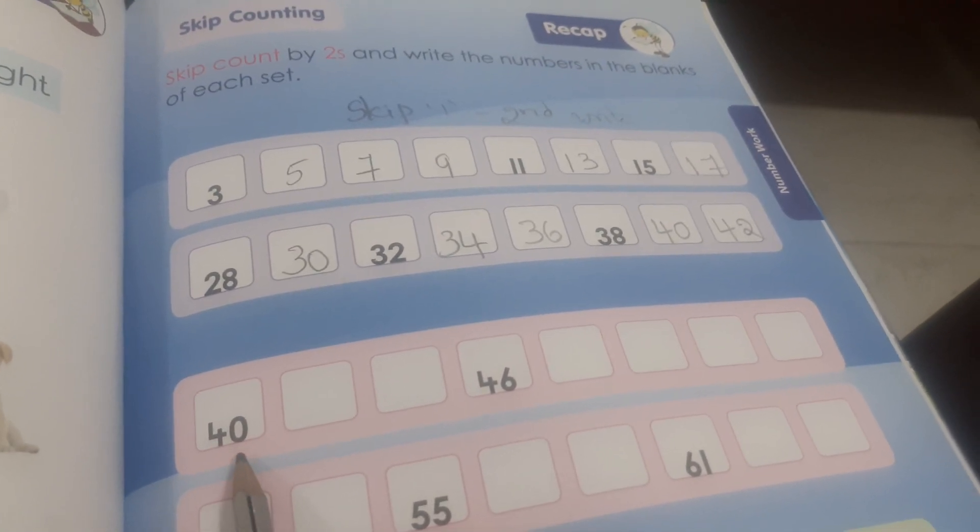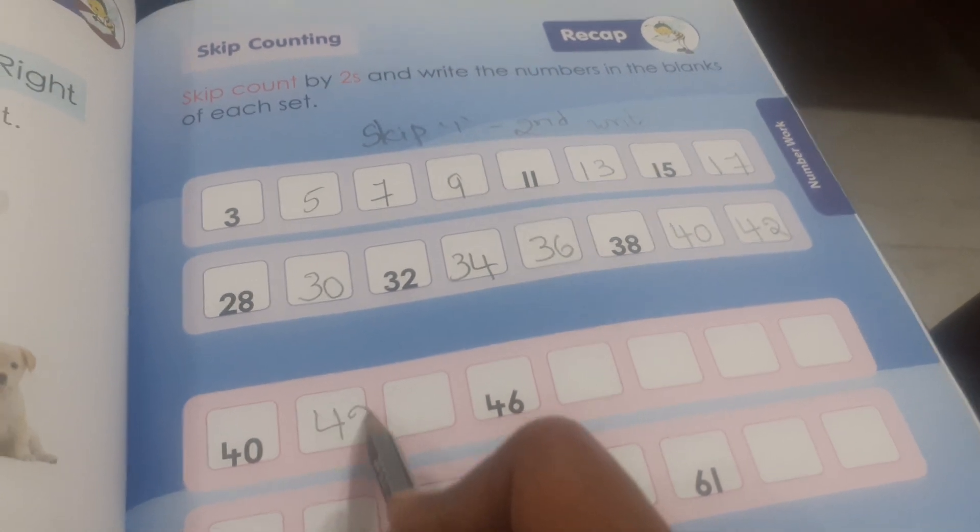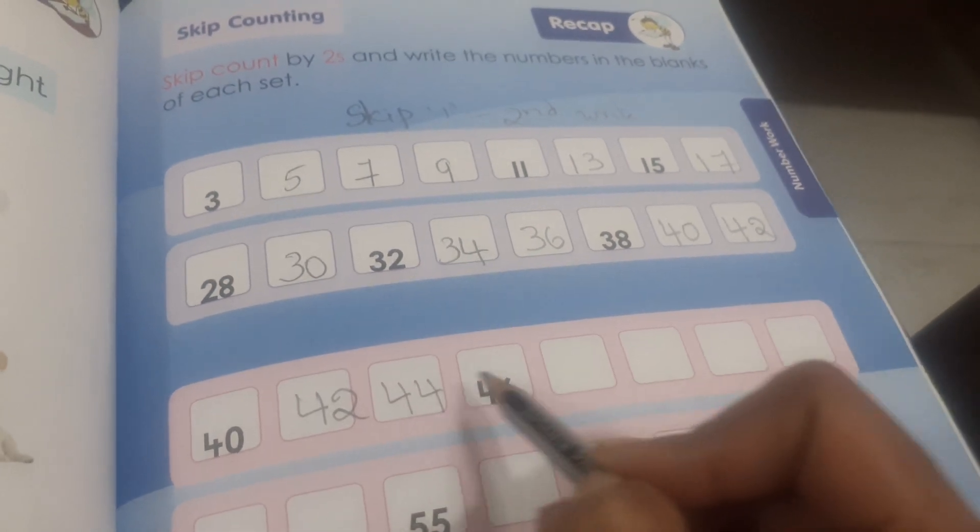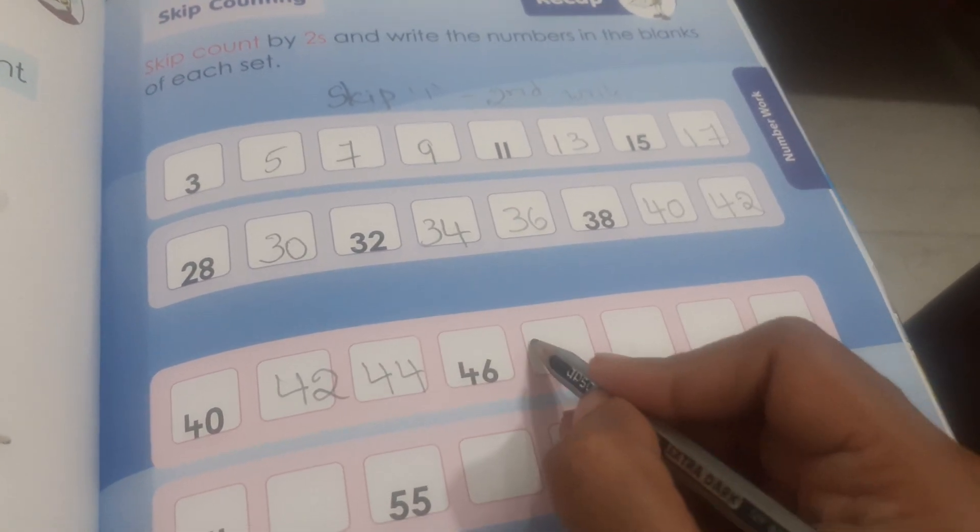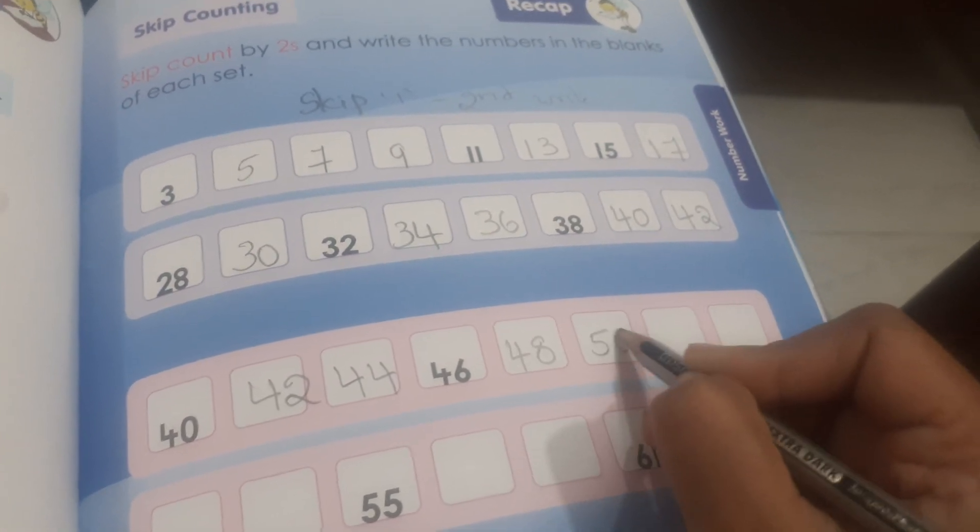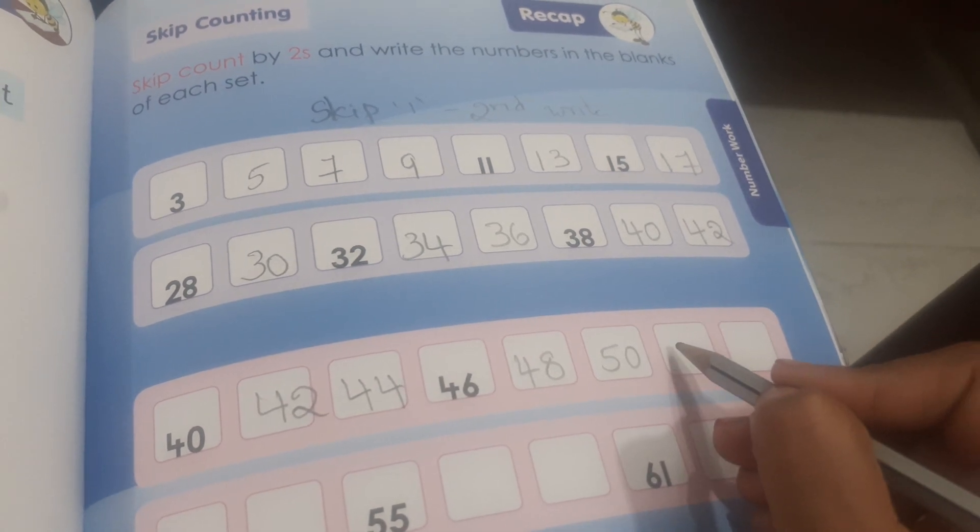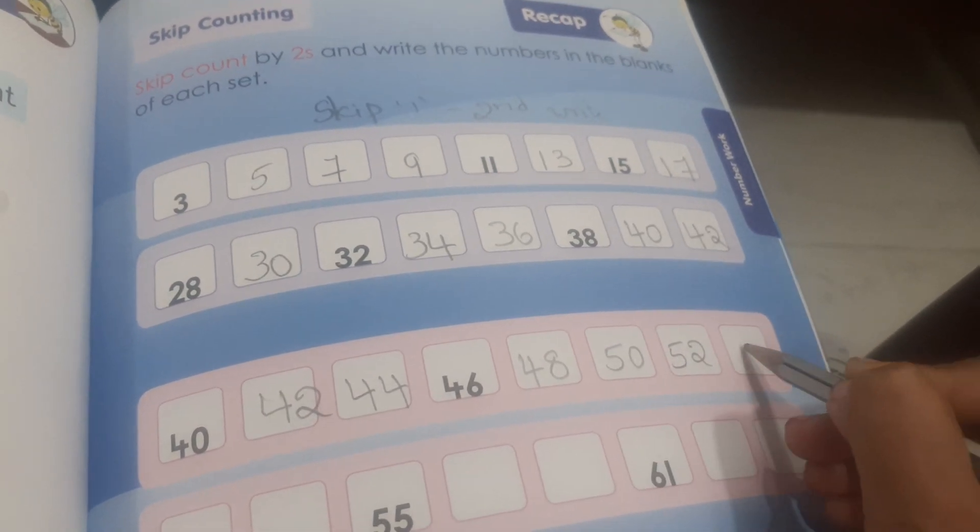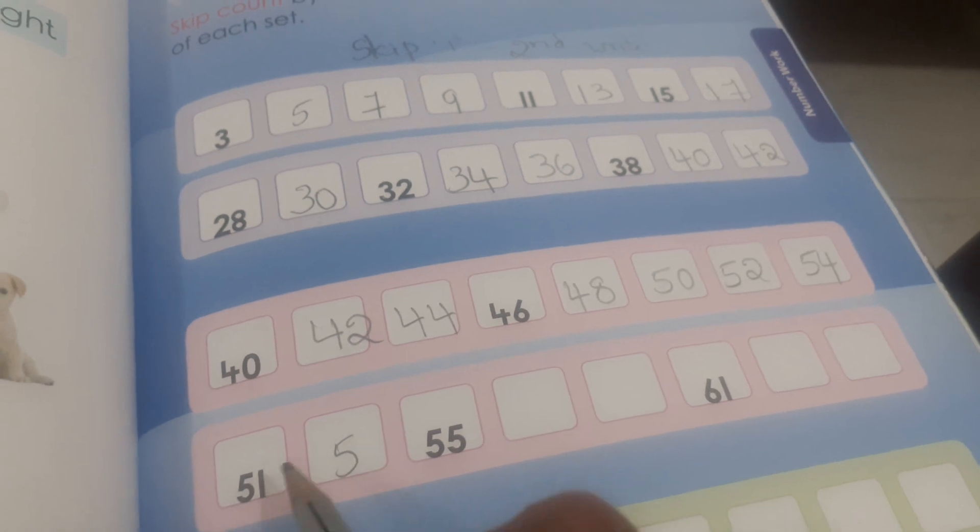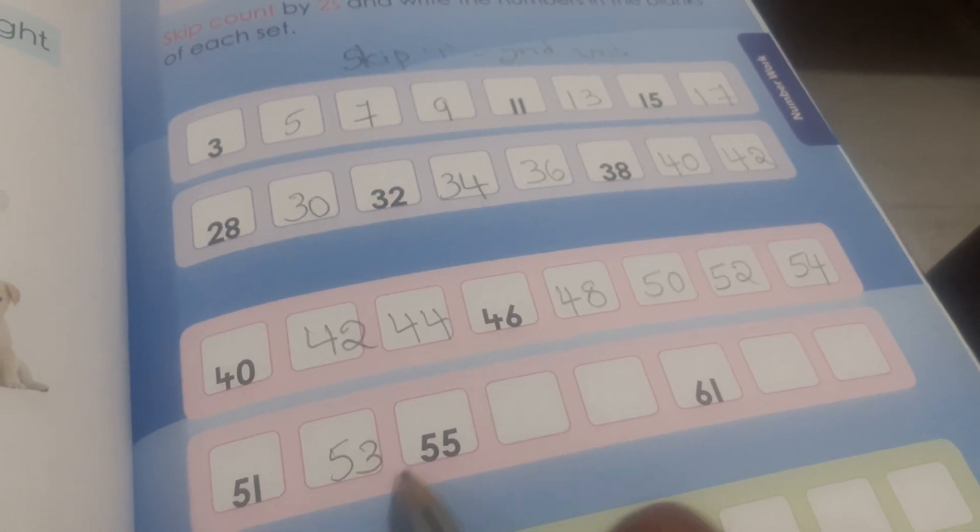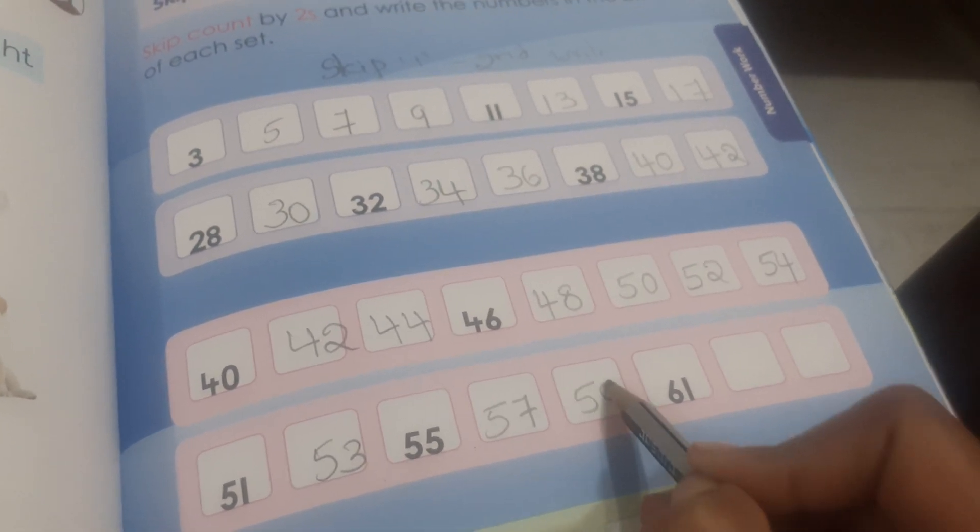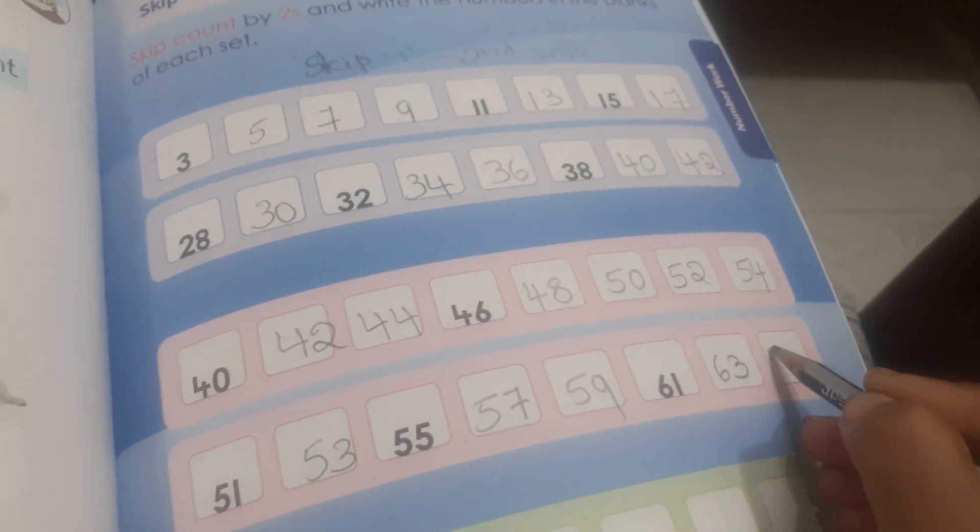Here, number forty is there. You have to leave forty-one and write forty-two here. Next, you have to leave forty-three, right? Forty-four, forty-five, leave forty-six, right? Leave forty-seven, write forty-eight, leave forty-nine, fifty-nine, right? Fifty, leave fifty-one is there, leave fifty-two, right fifty-three, leave fifty-four here, right fifty-five, leave fifty-six here, right fifty-seven. Next fifty-nine, sixty-one, sixty-three, sixty-five.